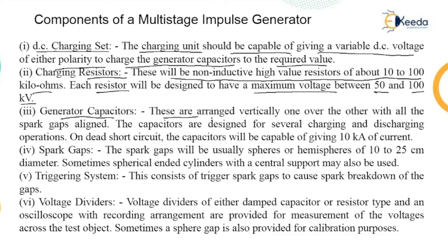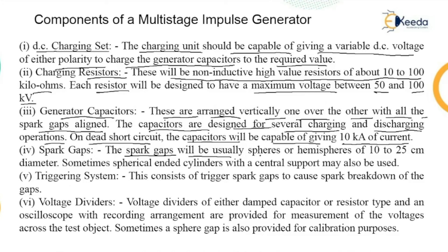Generator capacitors are arranged vertically one over the other with all spark gaps aligned, designed for several charging and discharging operations. On short circuit, the capacitors are capable of giving 10 kiloamperes of current. The spark gap G is usually spheres or hemispheres of 10 to 25 centimeter in diameter; sometimes spherical ended cylinders with center support may also be used. There is also a triggering system which triggers the spark gap causing the spark and breakdown of the gap.